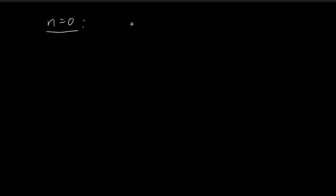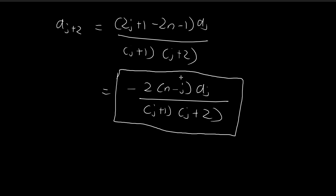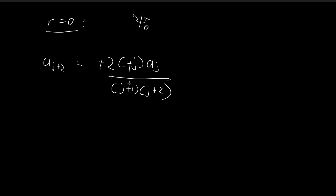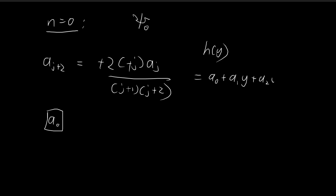Let's start with the simple case n equal to 0. We would expect to generate something that looks like xi0. Choosing n equal to 0, the recursion formula becomes: a of j plus 2 equals negative j over (j+1)(j+2) times a of j. We start off with a0, which we'll determine later using normalization. Recall that h(y) is an infinite series, so we need to find all these constants.